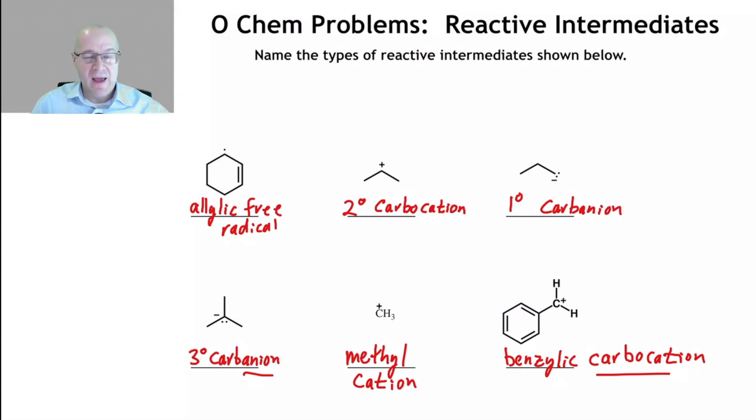You need to be able to identify allylic cations, allylic anions, allylic radicals, benzylic anions, things like that. You have to be able to do it. This is just a little quiz to kind of give us a little refresher. So make sure you go back into your notes, into your book, and learn all the other reactive intermediates that you have to know for your organic chemistry class.